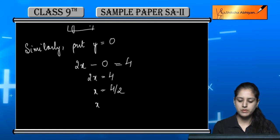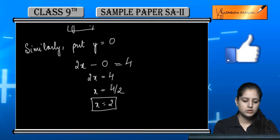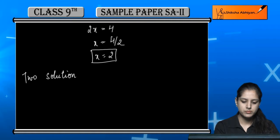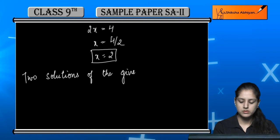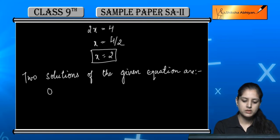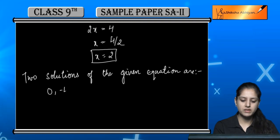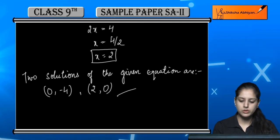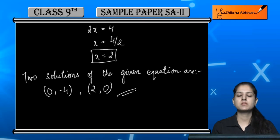So the two solutions of the given equation are (0, -4) and (2, 0). These are two solutions of the given equation.